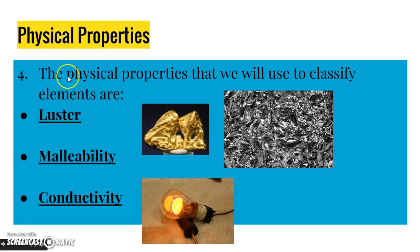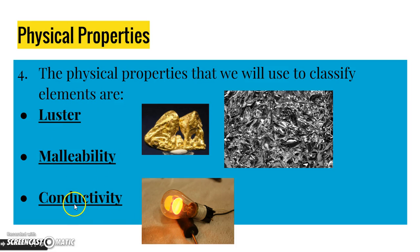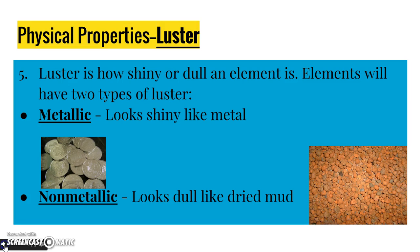The physical properties that we will use to classify elements are luster — we already learned about that one when we talked about minerals; it's how shiny or dull something is — malleability, and conductivity. We'll learn about those today. This is number four: physical properties that we use to classify elements. Number five is luster.